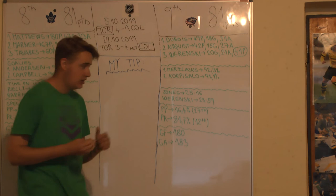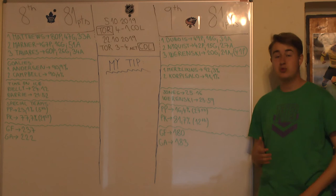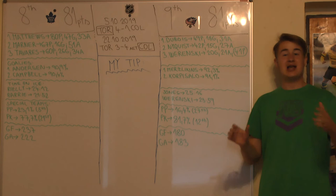We also have to mention that Columbus had multiple injuries throughout the course of the season. Dubois I believe was injured. Nyquist was injured. Seth Jones was injured. Zach Werenski was injured. Cam Atkinson was injured. I believe also Josh Anderson was injured. So everybody that could have been injured was injured unfortunately for Columbus.